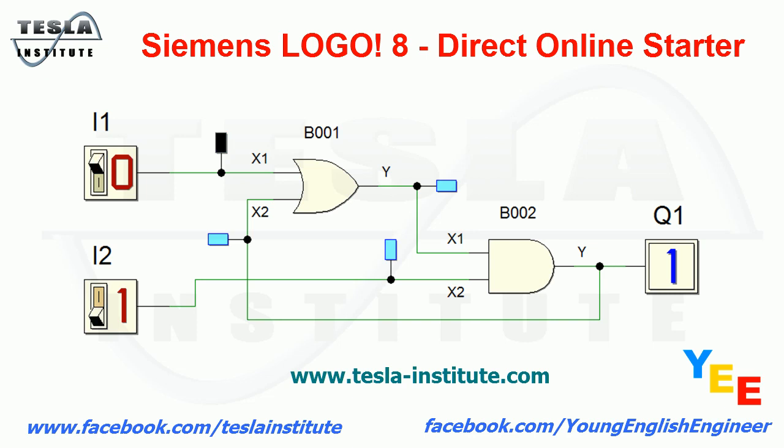The high state on output Q1 will remain until input I2 goes to low state. When we change input I2 state to low, output Q1 will change to low state as well. After returning to high state on input I2, output Q1 will remain in low state, and the circuit returns to the beginning state.